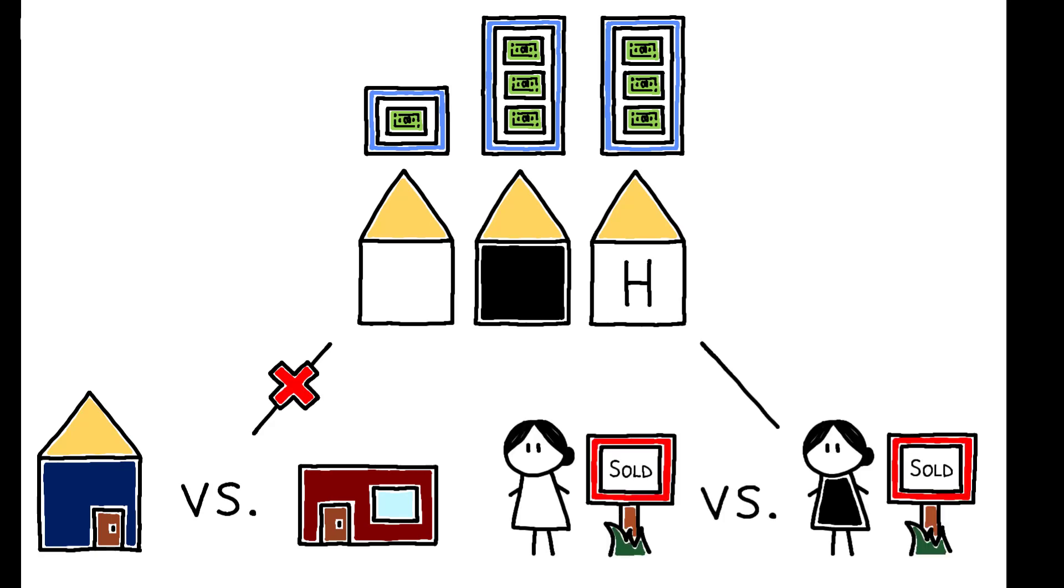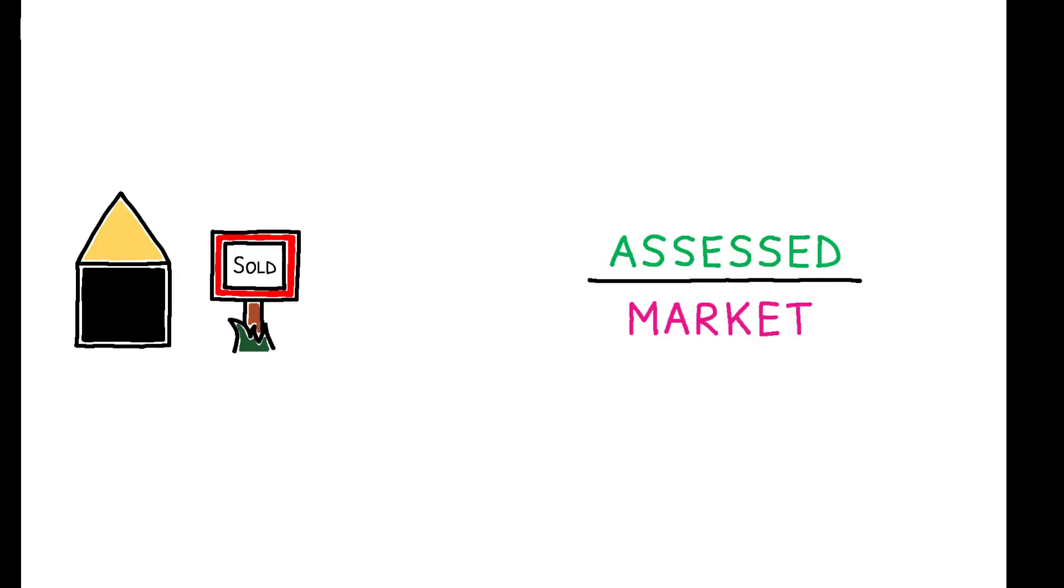Likewise, racial differences in transaction prices are not the culprit. If minority homeowners systematically received lower sales prices on their homes, this would push their assessment ratios upwards. But consistent with other research, these data show that realized market prices are actually slightly higher for minority sellers.